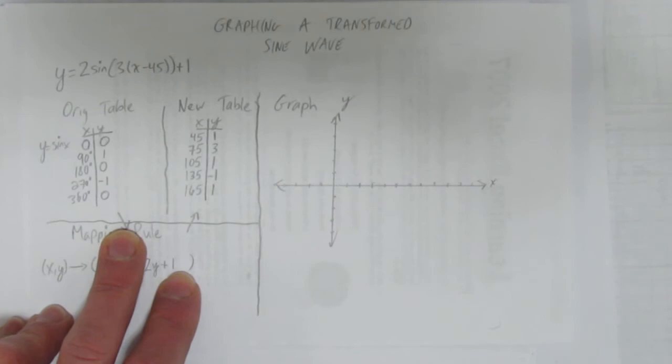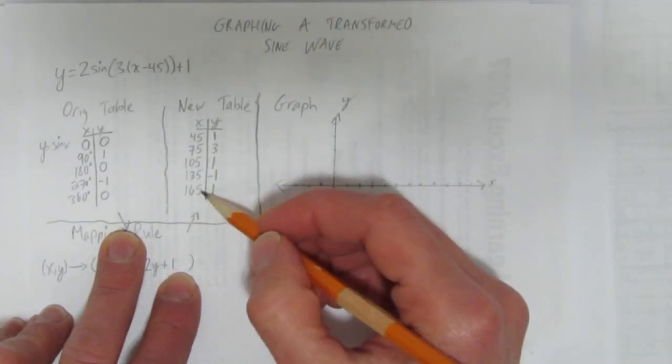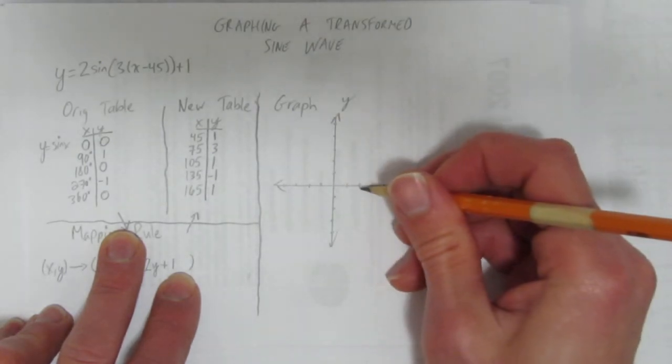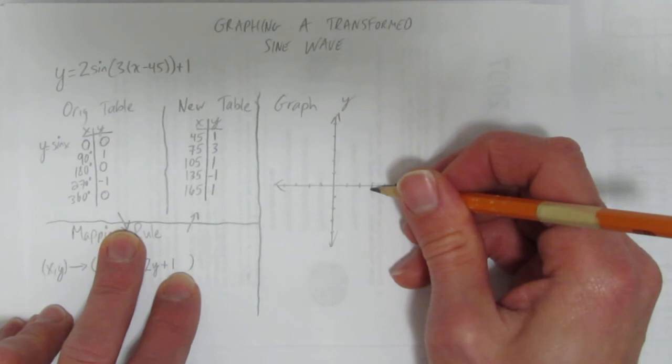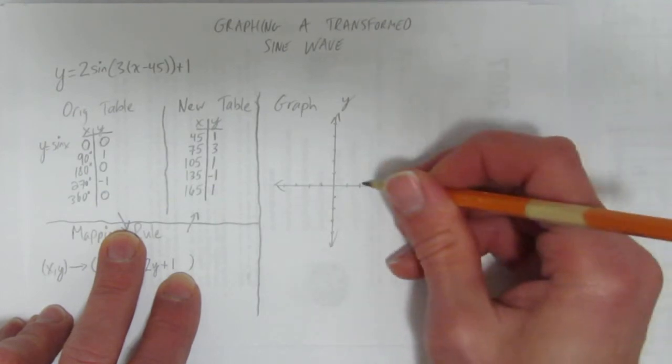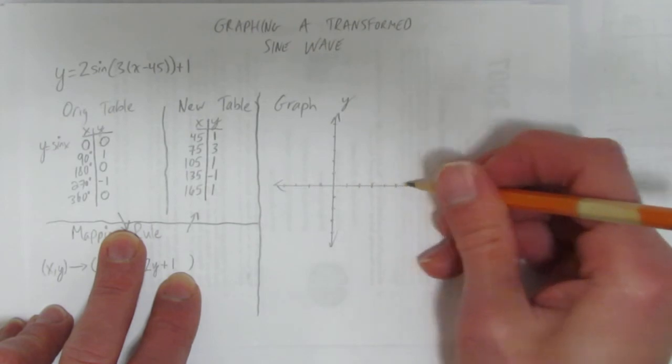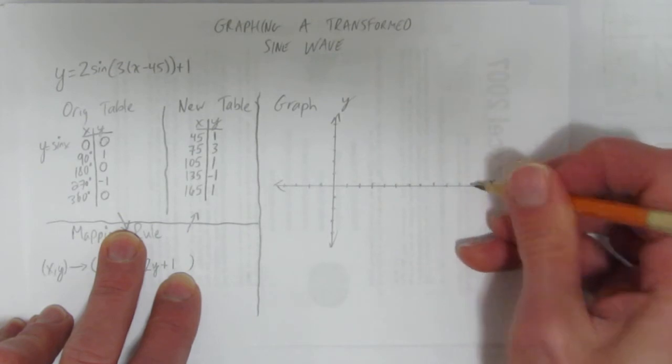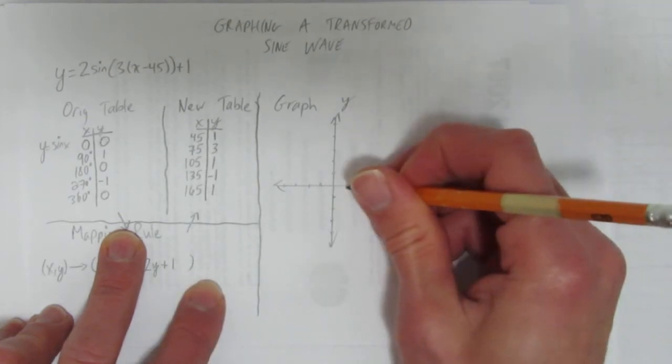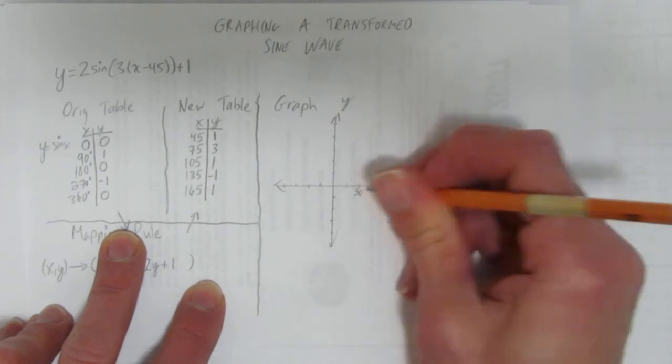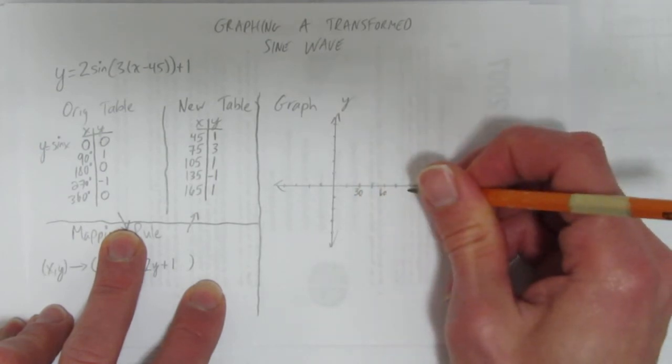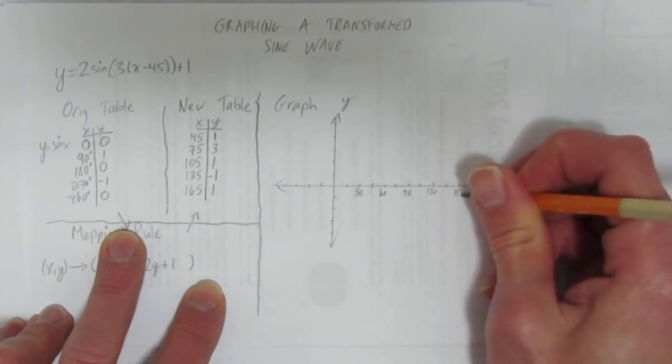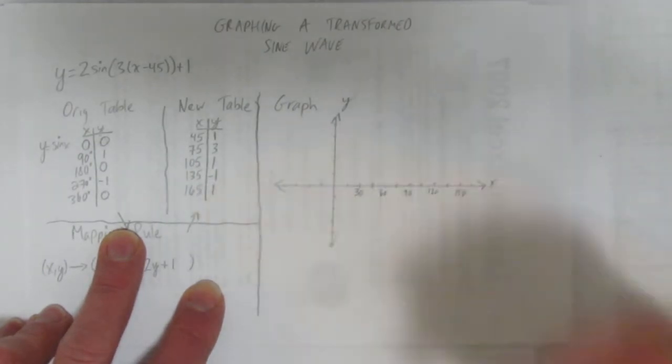Oh, we should put our scale first. Let's see. We need to go at least to 165. So probably a scale of 15 will work well. I hope that will fit. Let's see. 15, 30, 45. Looks like we might not have enough. Let's keep going. 15, 30, 45. So, 90. This will be 135. Oh, it just might make it. Alright, let's label them. This is... I'm going to label every second tick. This is 30. So, this is 60. This is 90. 120. 150. Perfect. Wow. I got it exactly right. This last tick will be 165. That's great.